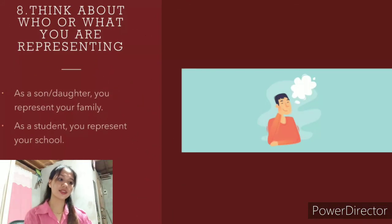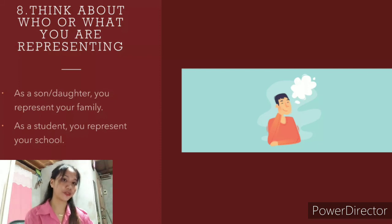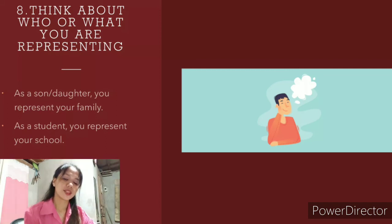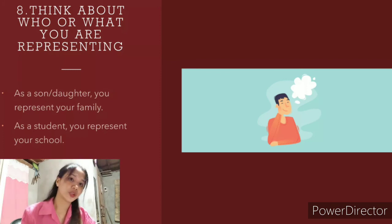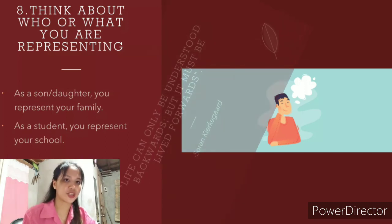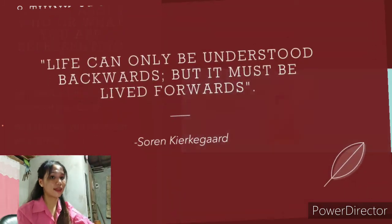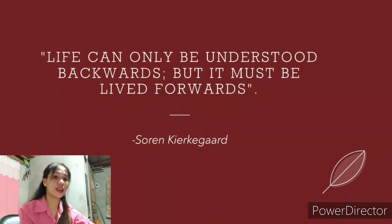The eighth and last one is think about who or what you are representing. As a son or daughter, you represent your family. As a student, you represent your school. We should be a good role model to show others that you are a good person and a good member of your group or organization. So before I end this topic, I will leave a quote by Søren Kierkegaard.